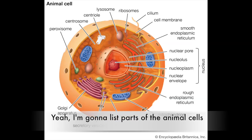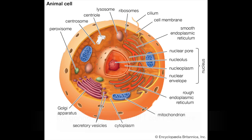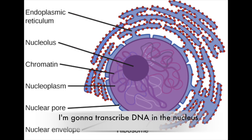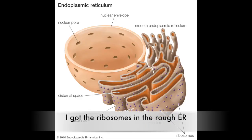Yeah, I'm gonna list parts of the animal cells, I'm gonna name them 'cause I can't no more. I'm gonna transcribe DNA in the nucleus, then transport that to the ribosomes. I got the ribosomes in the rough ER.